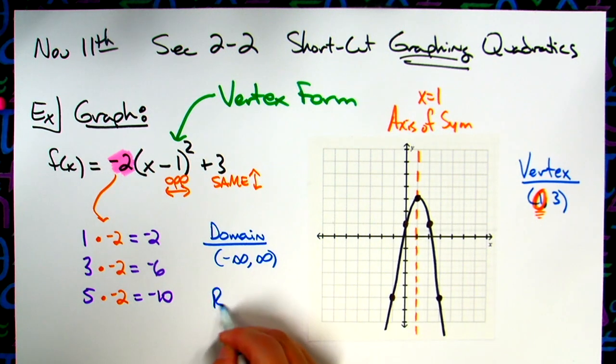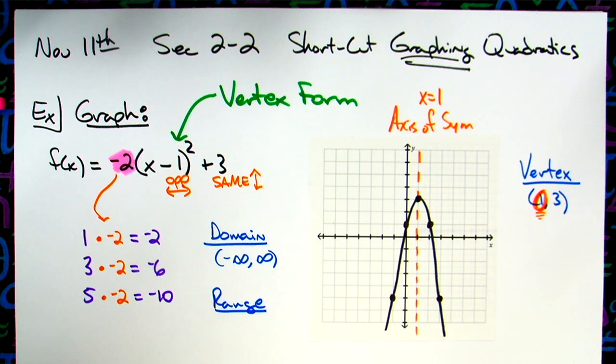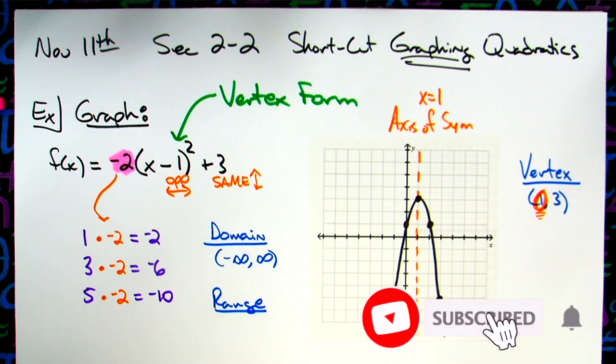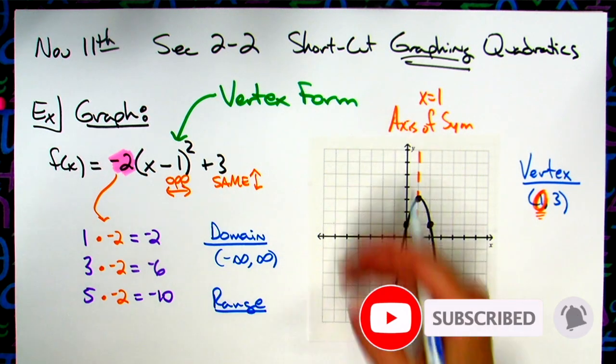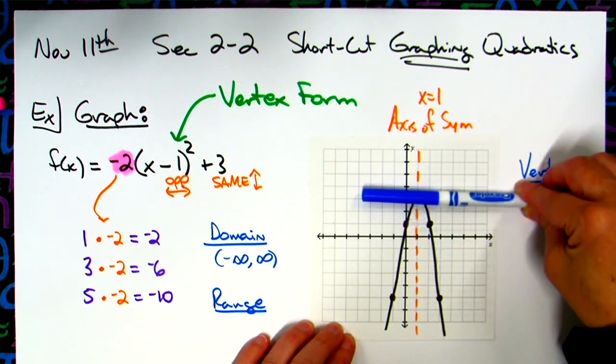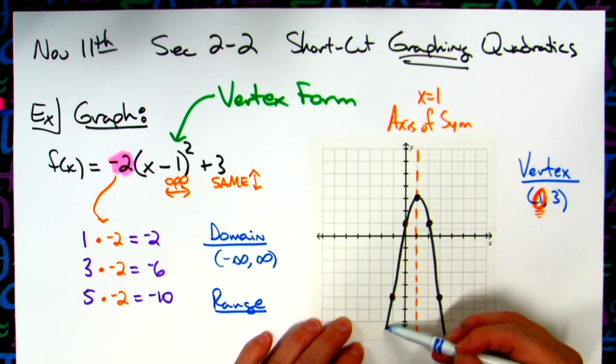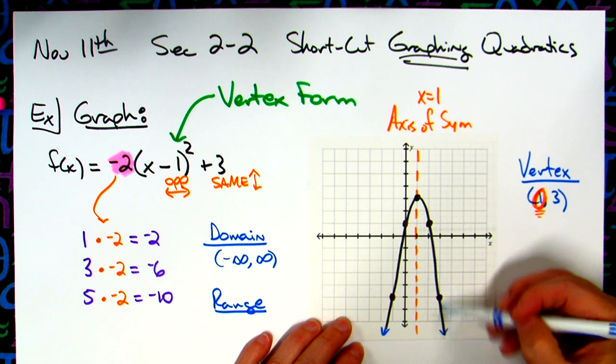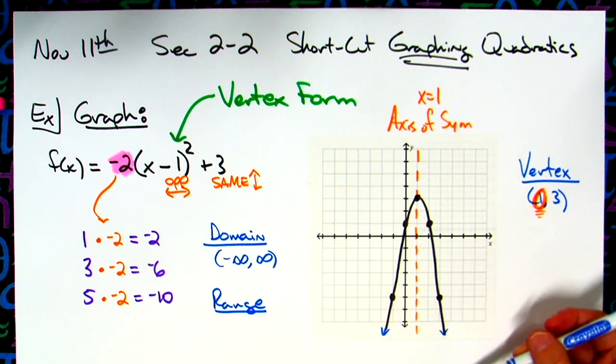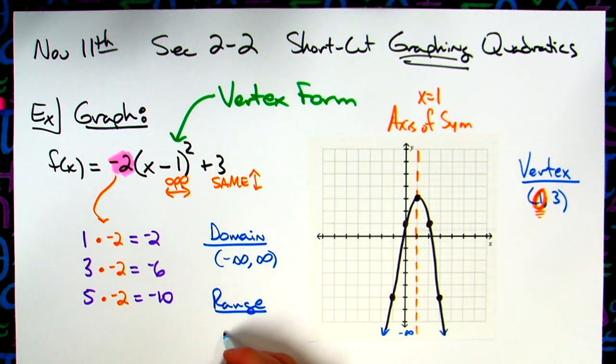Now, our range, the range changes for every one of these because if you remember the range, the range is where the graph goes along the y-axis. And we always have to start at the bottom of the graph and work our way up and find out all the y values that are included in our range. So this parabola goes on forever and ever and ever in this direction. So what's my y value going down? Negative infinity. So do I need square or curvy brackets on my negative infinity? Curvy. Always curvy.